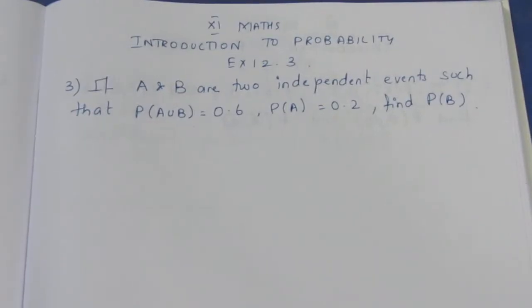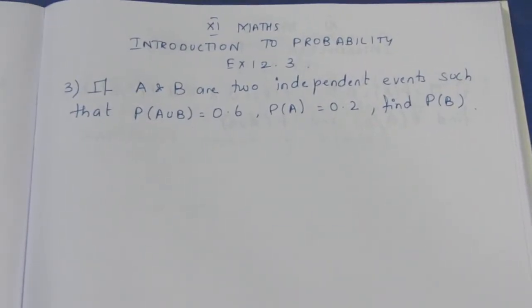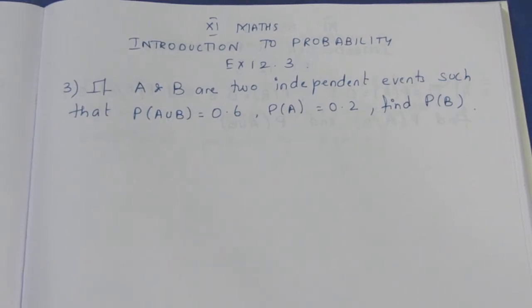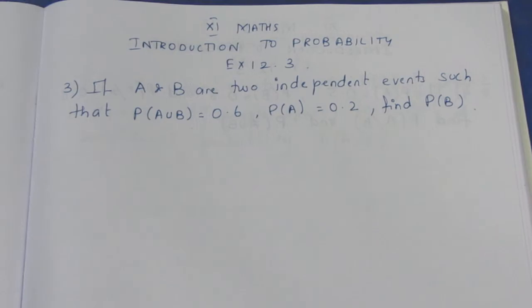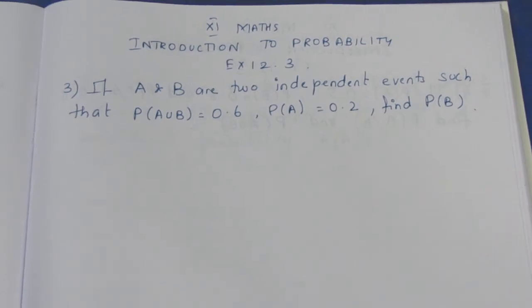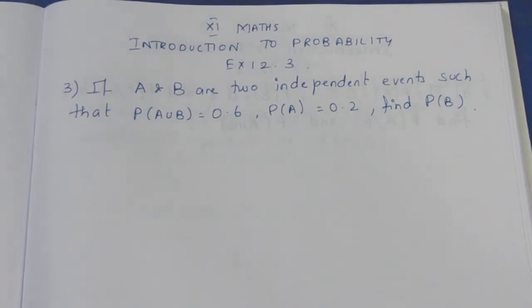Hello viewers, I am Ike Lee. In the 11th standard introduction to probability, exercise 12.3, third sum. Question: If A and B are two independent events such that P of A union B equals 0.6 and P of A equals 0.2, then find P of B.